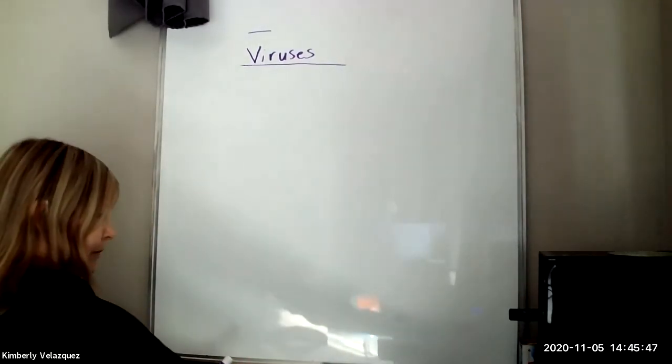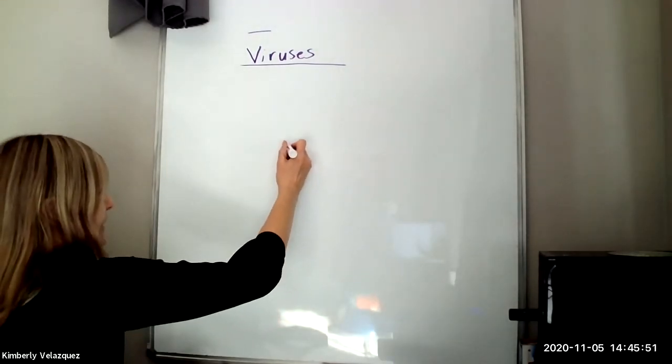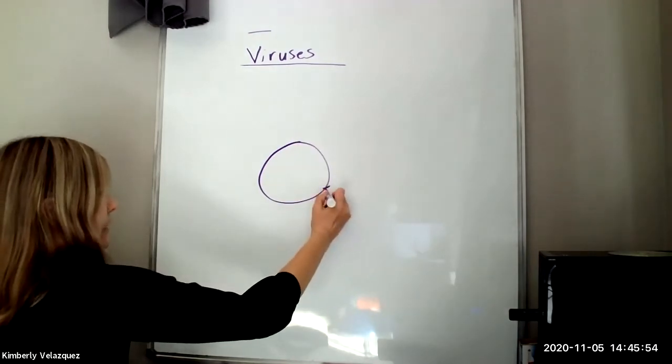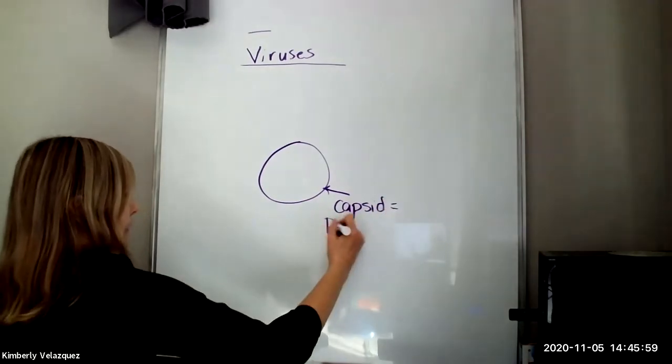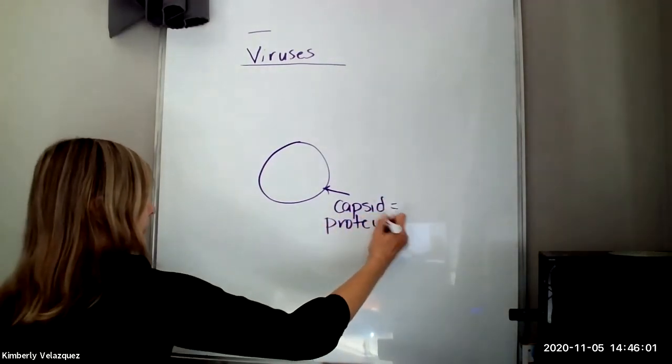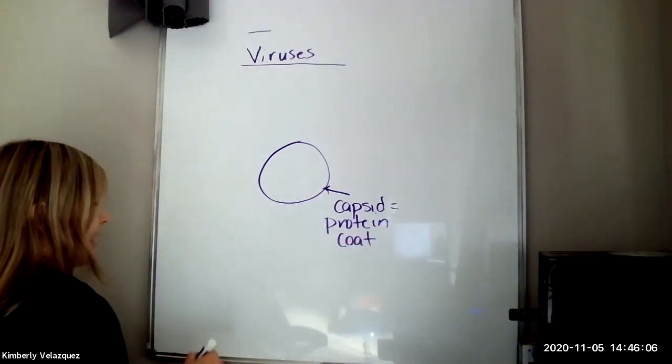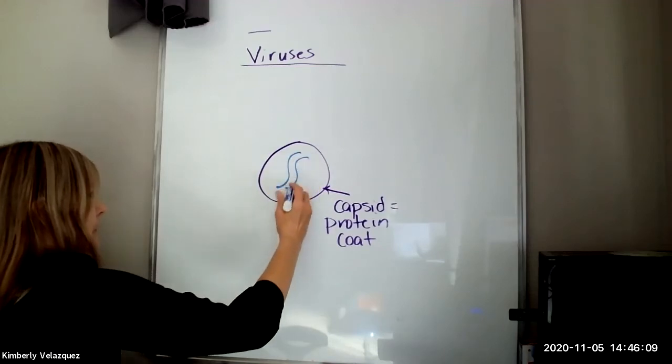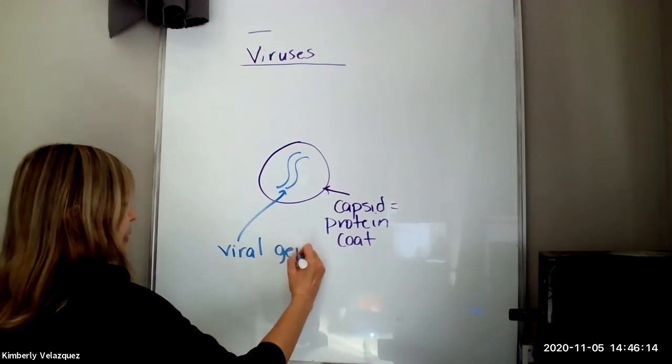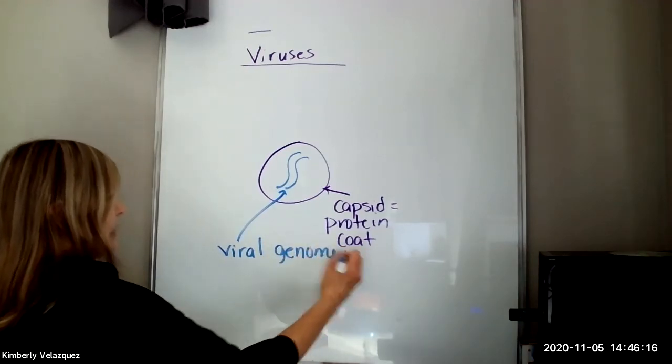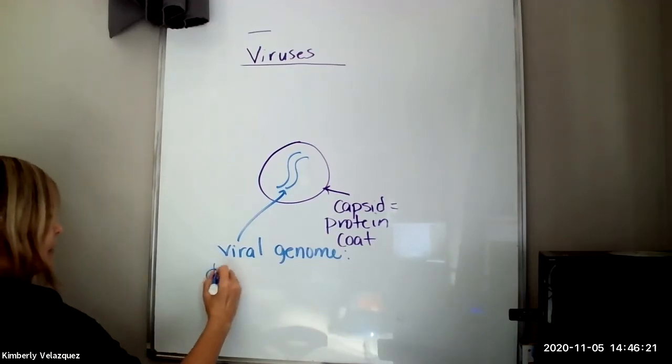So viruses are very simple in structure. They have on the outside some type of protein coat called a capsid. And inside that capsid is the viral genome. When we say viral genome, there are some crazy things that can happen with the viral genome. The viral genome can be double-stranded DNA,